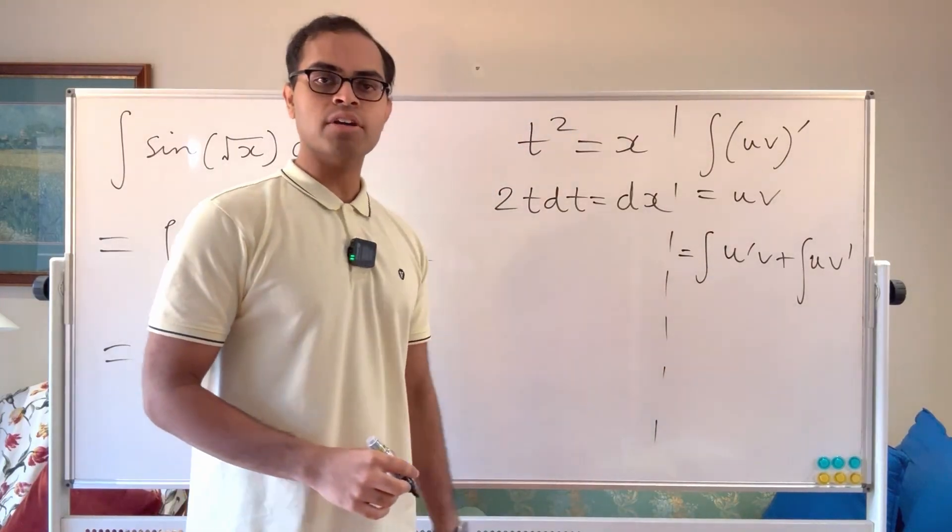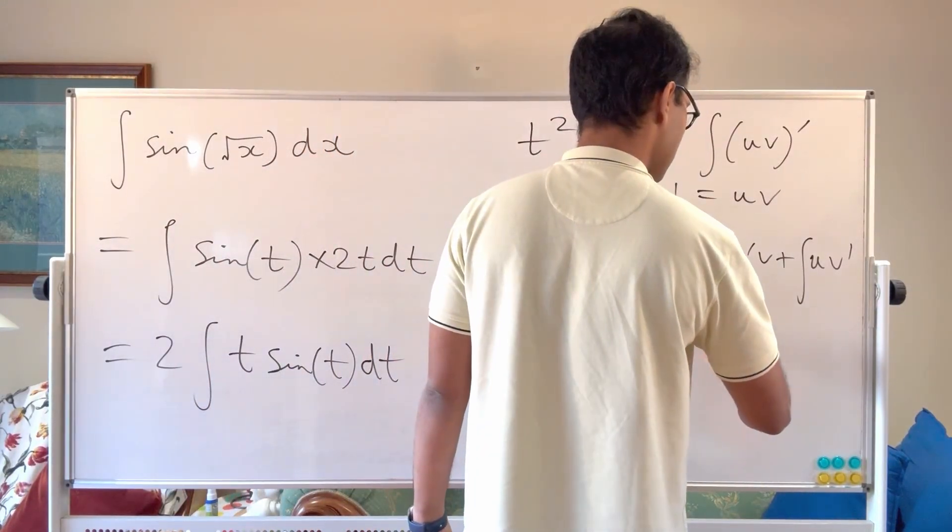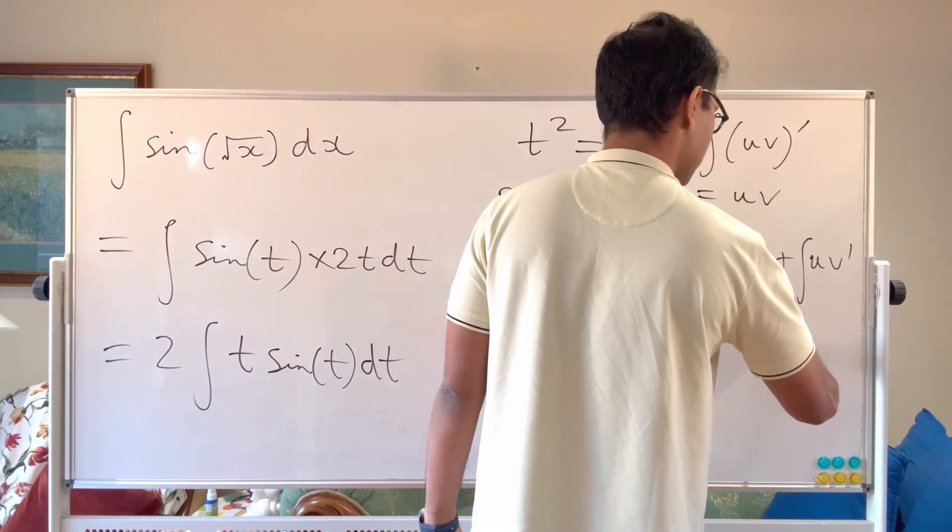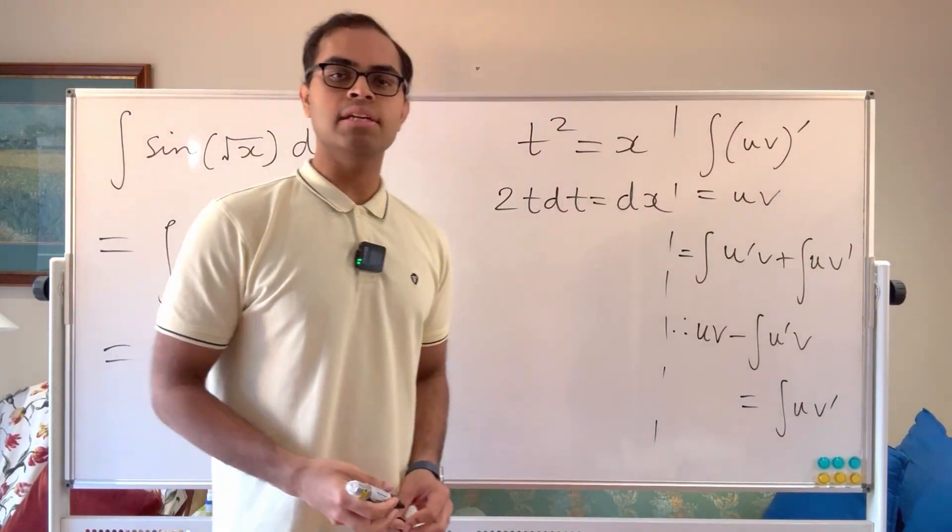So we've just used the product rule for the derivative of the product. And so therefore, we get that u v minus the integral of u prime v is going to equal the integral of u v prime. That's what integration by parts is.